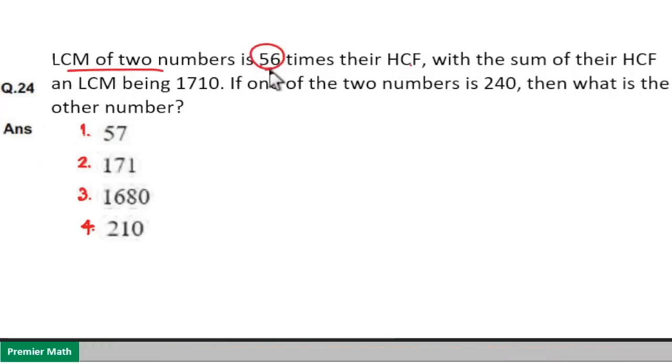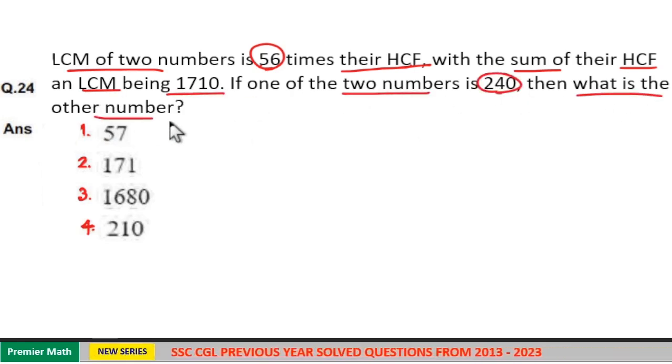LCM of two numbers is 56 times their HCF, with the sum of their HCF and LCM being 1710. If one of the two numbers is 240, then what is the other number?